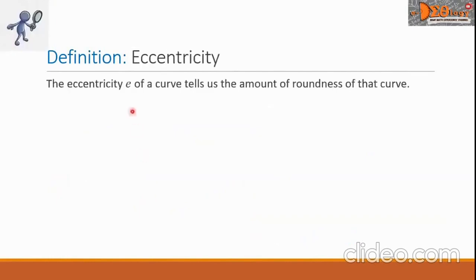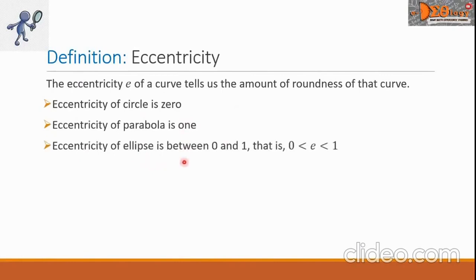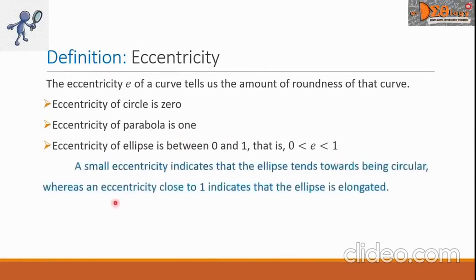Now let us define eccentricity. The eccentricity, denoted by E, of a curve tells us the amount of roundness of that curve. Take note that the eccentricity of a circle is zero, the eccentricity of a parabola is one, and the eccentricity of an ellipse is between zero and one. A small eccentricity indicates that the ellipse tends towards being circular, whereas an eccentricity close to one indicates that the ellipse is elongated.